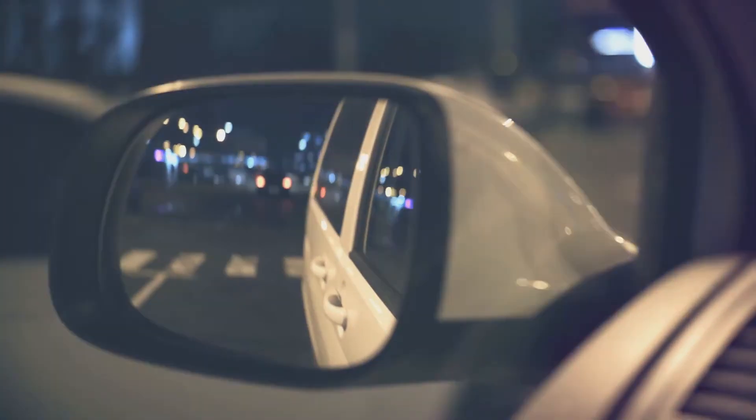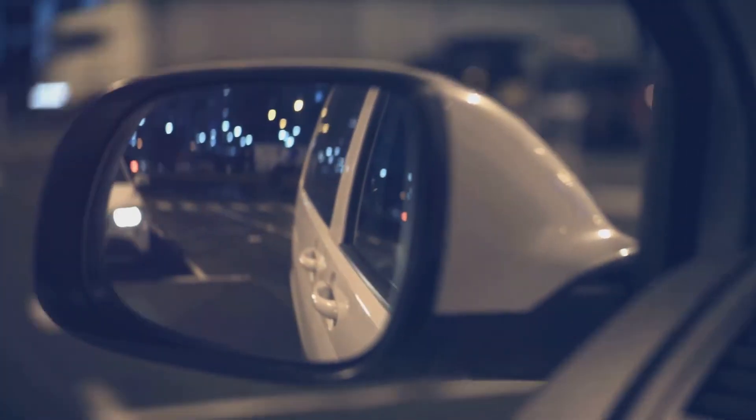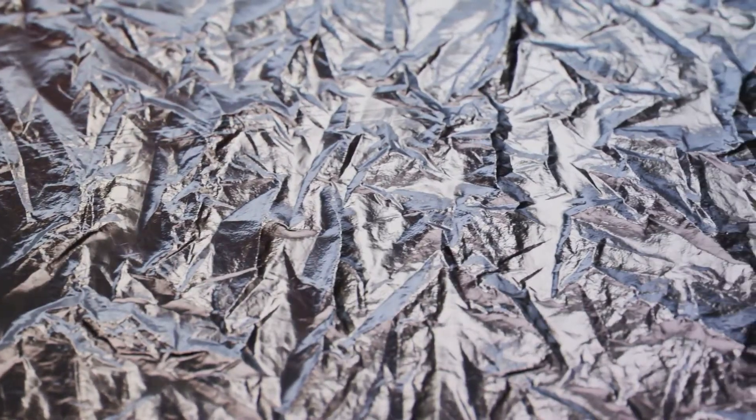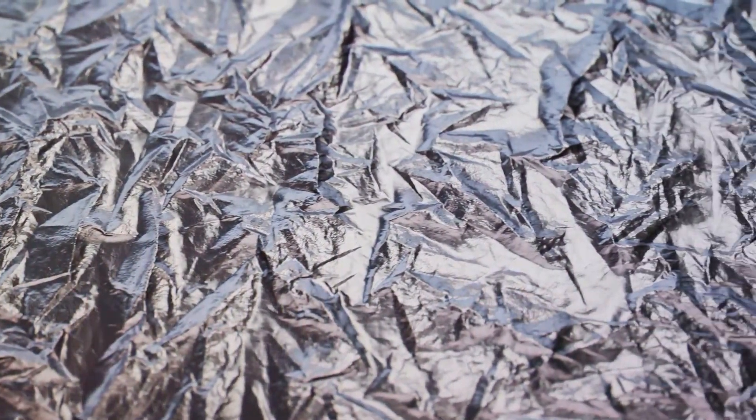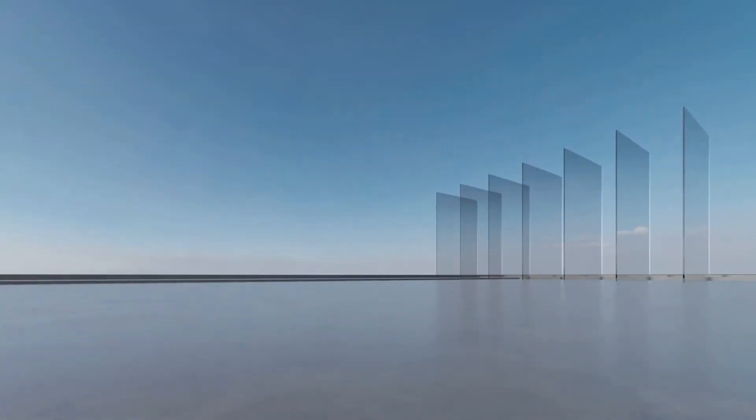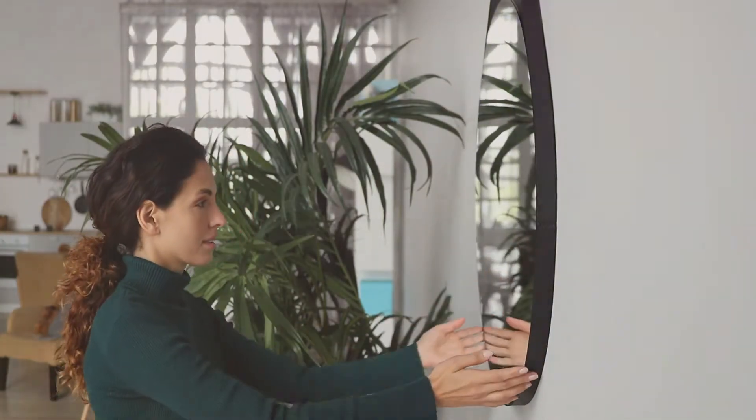Liquid silver is then applied, and this is where things get reflective. The silver reacts with the tin, creating a shiny, mirror-like surface. However, in our modern times, we often use aluminum instead of silver. Why, you ask? Well, aluminum not only offers high reflectance, but it's also readily available. Now that our glass is reflective, it needs to be protected.